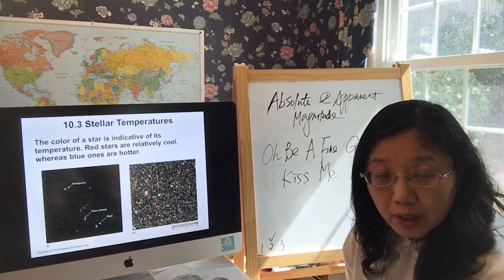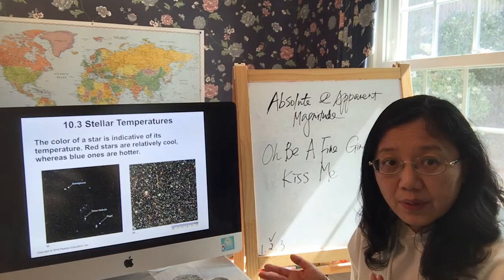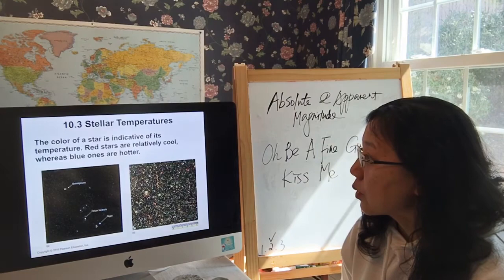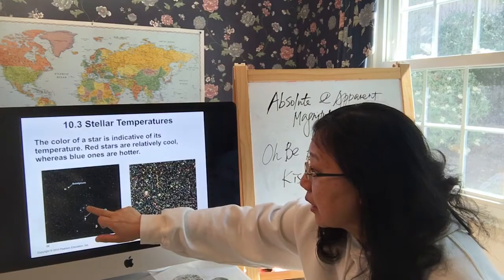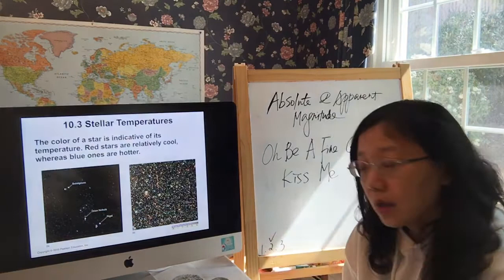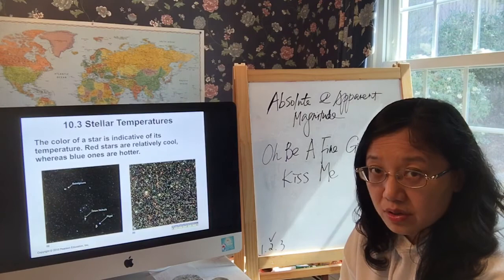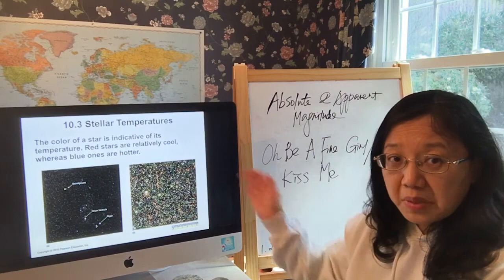In today's lesson, besides brightness, we want to know the temperature of a star and how temperature relates to its color. The color of a star is an indication of its temperature — red stars are cooler and blue stars are much hotter. Looking at the Orion Nebula, the blue stars are young, energetic, hot stars, while the red stars are older and cooler.